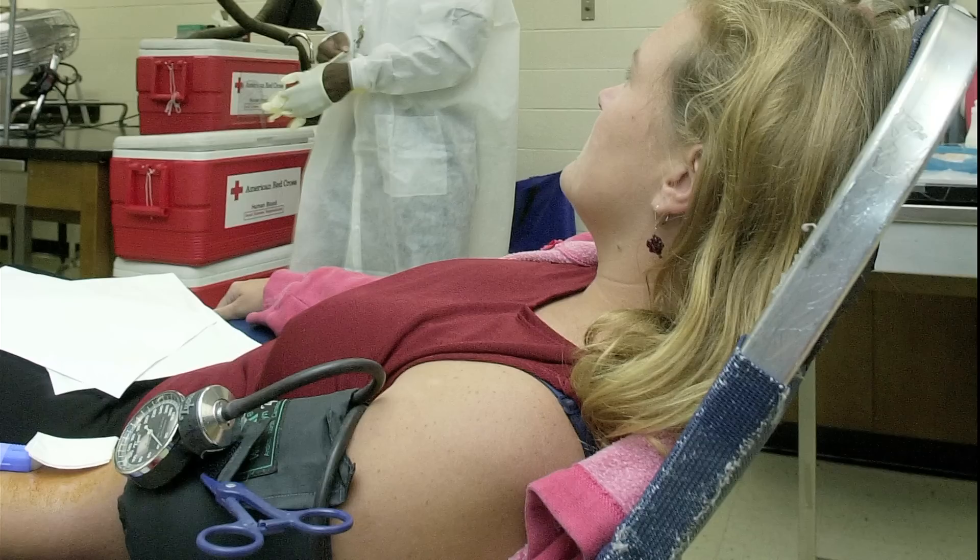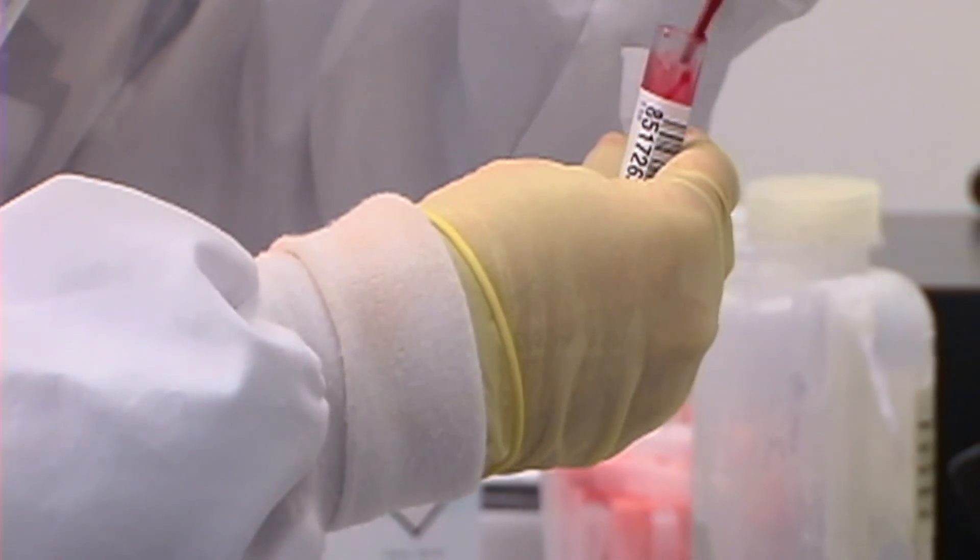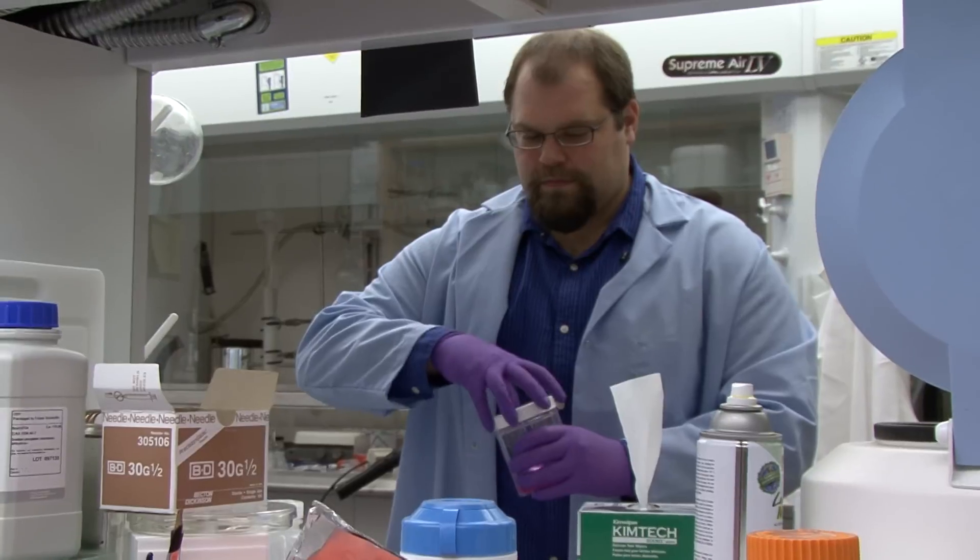Donated blood right now has a shelf life of about 40 days. It has to be refrigerated. Of course you have to match blood types and a synthetic product potentially wouldn't have any of these limitations.